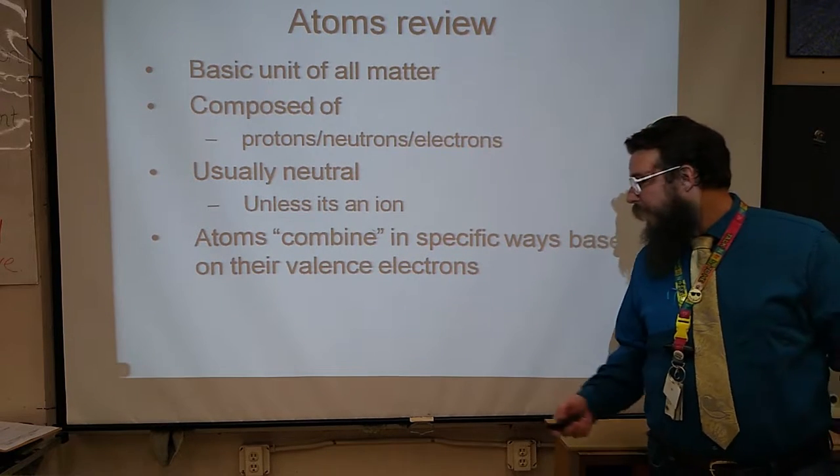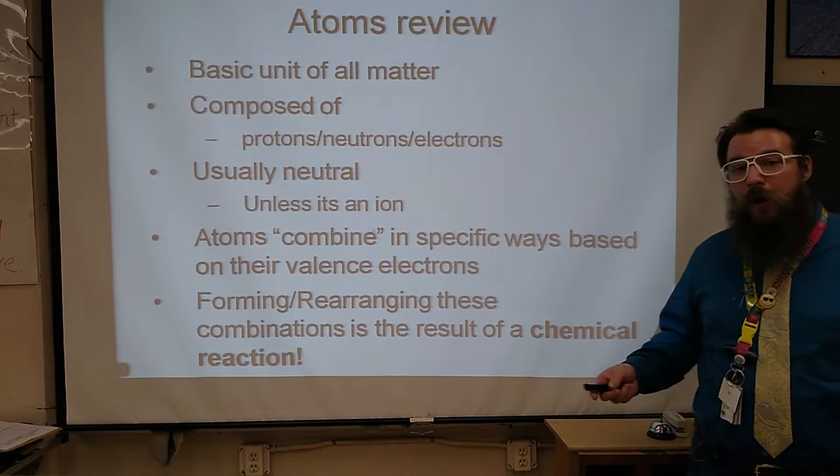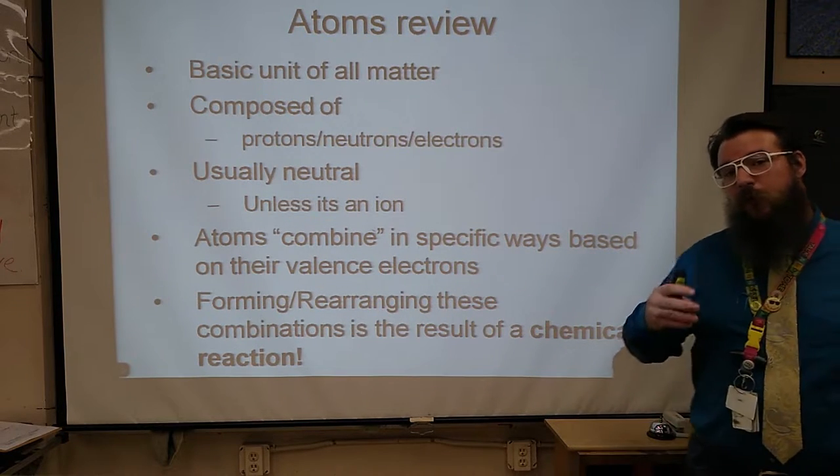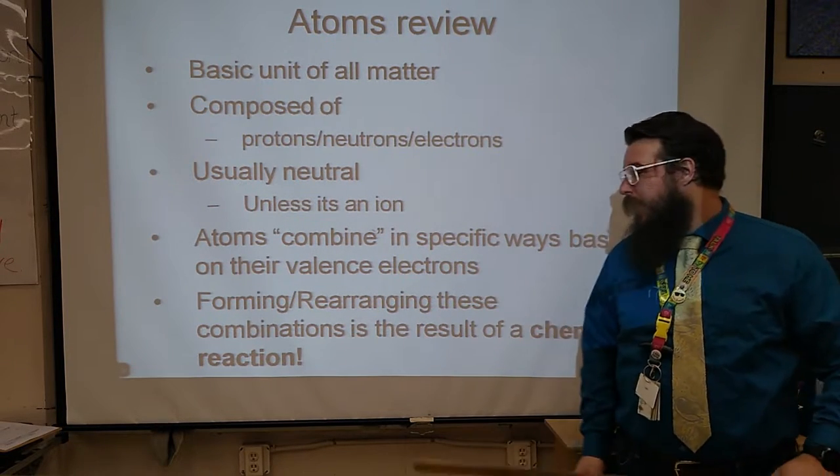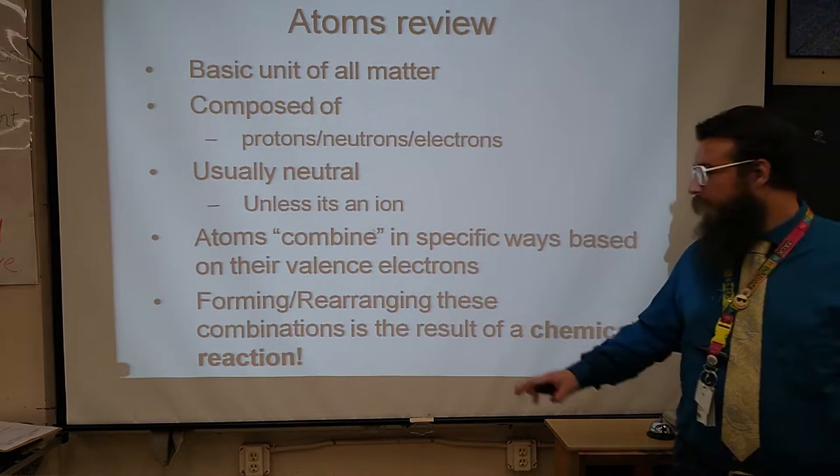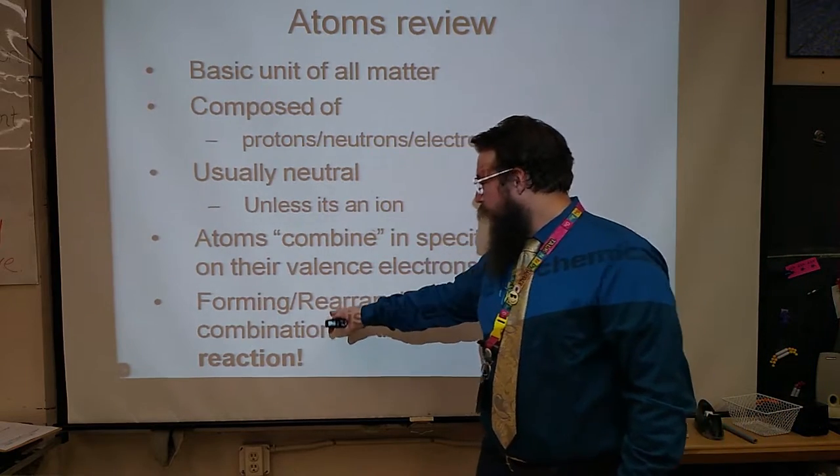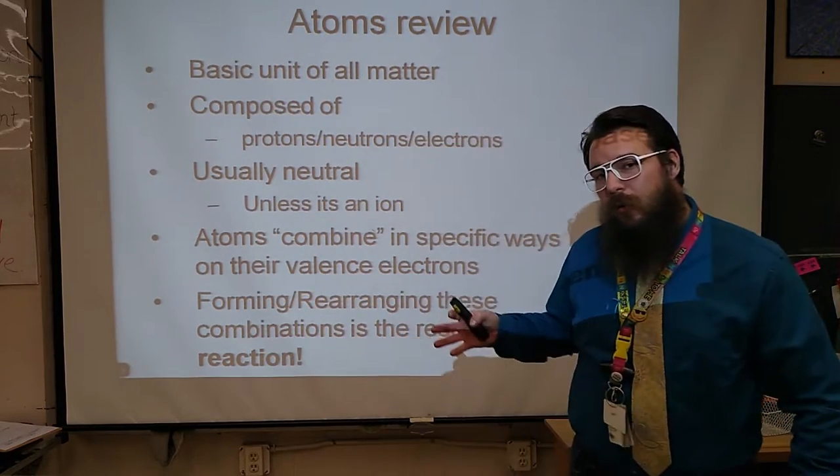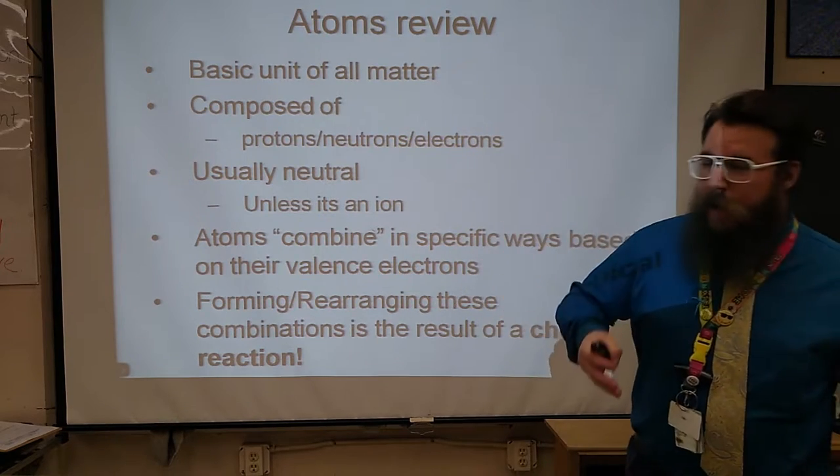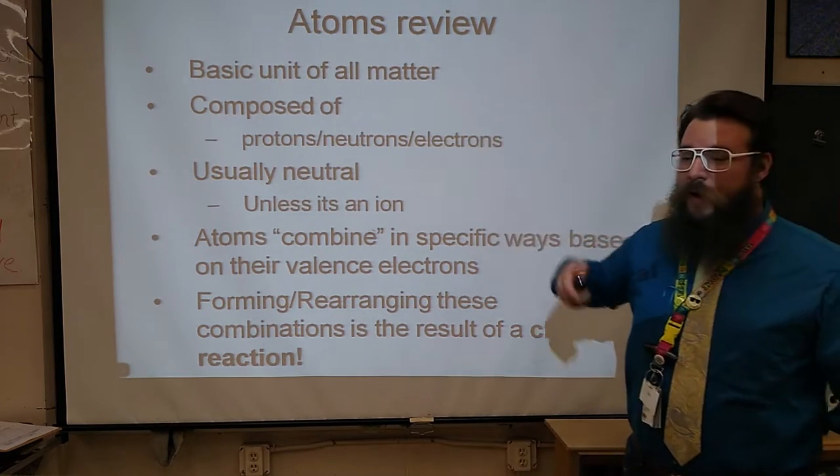These atoms can combine in specific ways based on their valence electrons. We learned about that last unit that was talking about the bonds. So if you're going to form or rearrange the combinations, you're going to form or rearrange the bonds, that would require a chemical reaction. Anytime you have a chemical reaction, that means we're changing, rearranging, or forming bonds that weren't already there. Usually, it's breaking some bonds and making some bonds. We call that a chemical reaction.